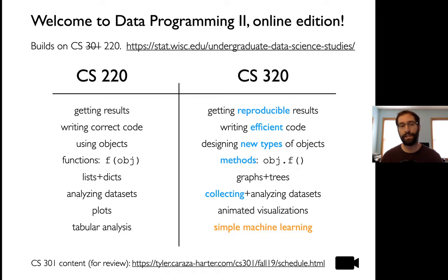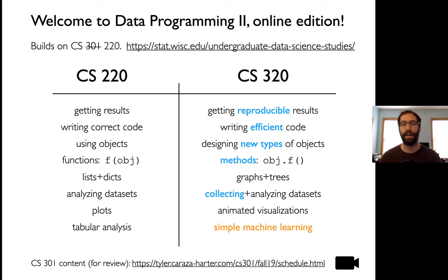This course builds on CS220, and in CS220 one of our main goals was just to get results that were correct. In 320, we have a couple more goals besides just simple correctness. One is that we want to have reproducible results — when I run my code and give it to somebody else, are they going to get the same answers? Reproducibility is very important to data scientists. Second, when I talk about performance, it's not enough to just get the right answer — can it do it in a reasonable amount of time, especially as we deal with bigger and bigger data sets? I don't want my code running for many minutes, hours, or hopefully not days.